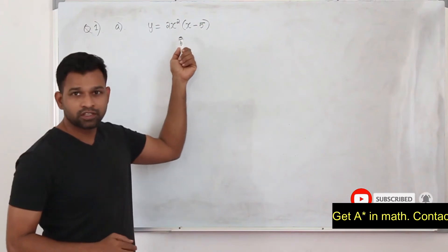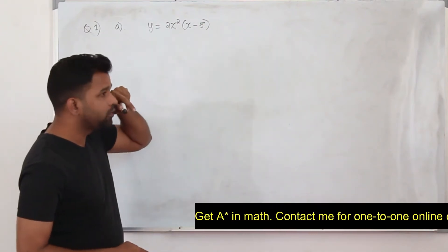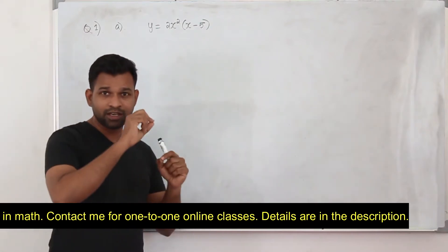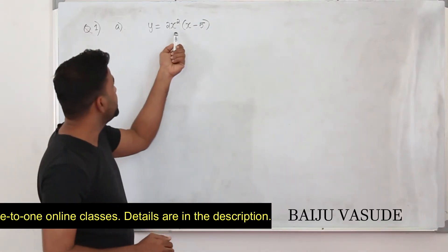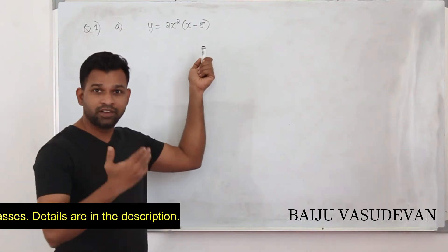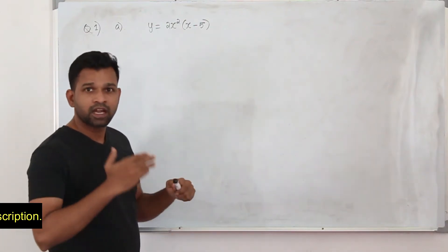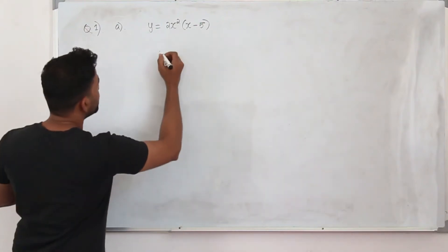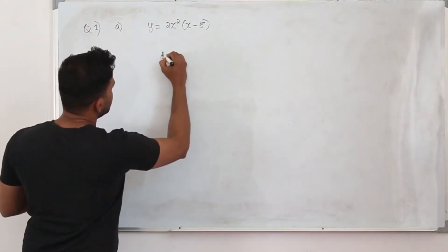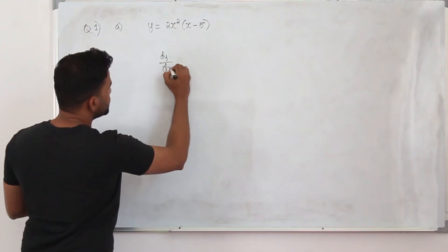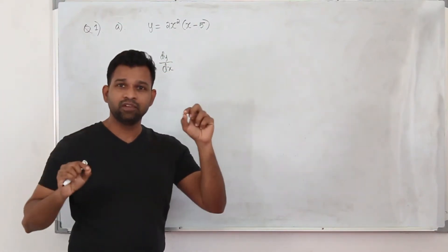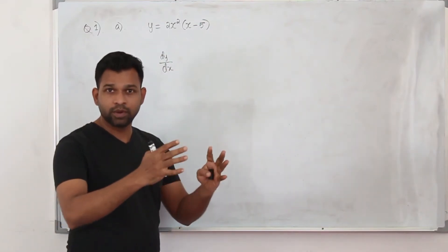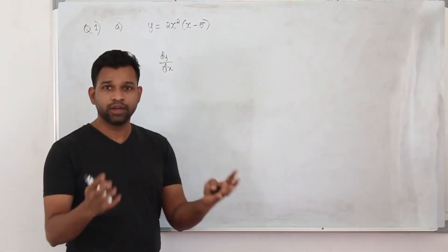We don't know how many stationary points this function has. At the stationary point, the slope will be 0 — at the turning point the slope will be 0. So we are going to differentiate with respect to x and equate it to 0, because dy/dx is the slope gradient function. At the stationary point the gradient will be 0, so equate dy/dx to 0 and solve to get the x-coordinates.